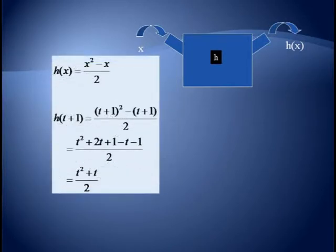What if we had H(t + 1)? This says to plug t plus 1 in for x. We get (t + 1)² minus (t + 1) divided by 2. (t + 1)² is t² + 2t + 1, and distributing the minus sign gives minus t and minus 1. Combining like terms gives us t² + t divided by 2.